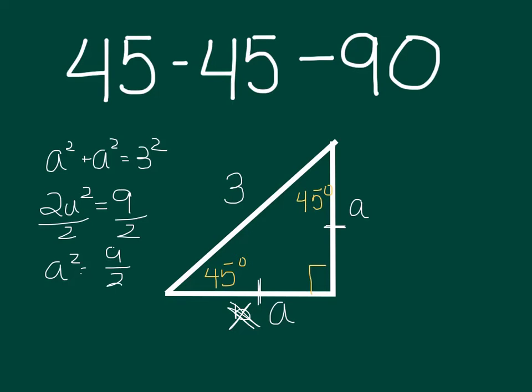Now I just have left to take the square root. So a equals the square root of 9/2. Well you guys know a little bit better because this still has a denominator that's a square root. Because this is really a equals the square root of 9 over the square root of 2.